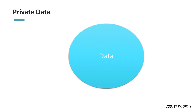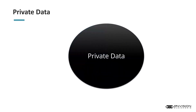Hyperledger Fabric also supports private data — confidential data stored in a private database on each authorized peer. This is a benefit that Ethereum doesn't have built in. Access to this data is restricted to one or more organizations on a channel via private data collection. This is important to note because certain use cases will require, based on privacy needs, one blockchain framework over another.